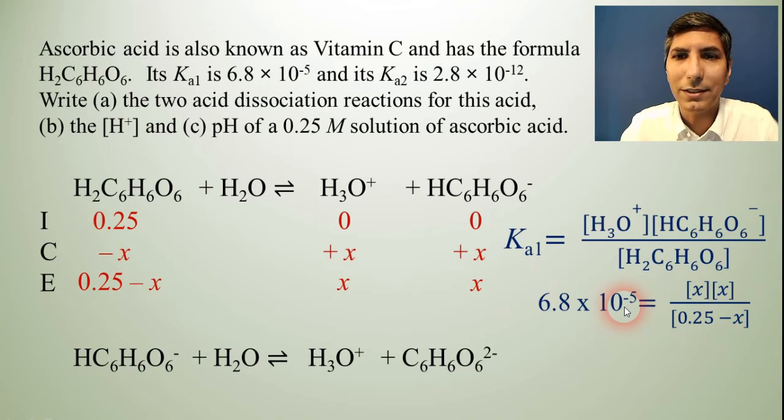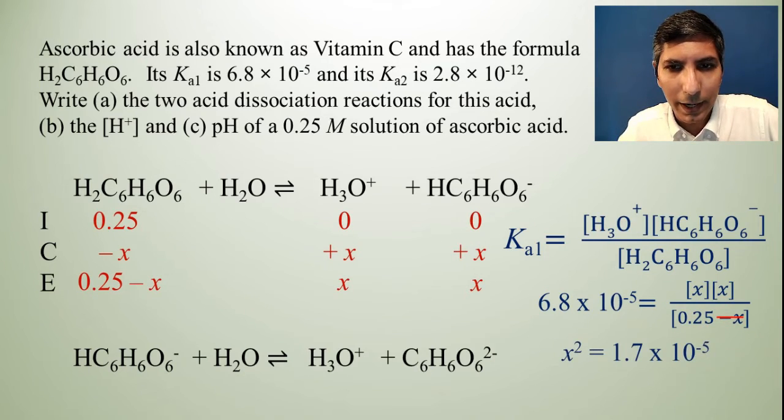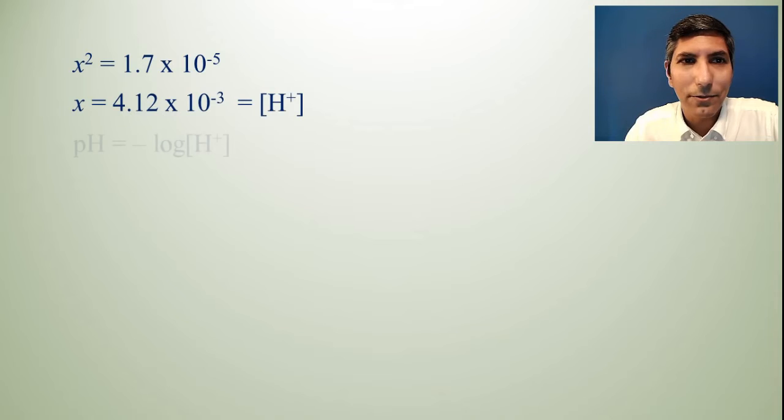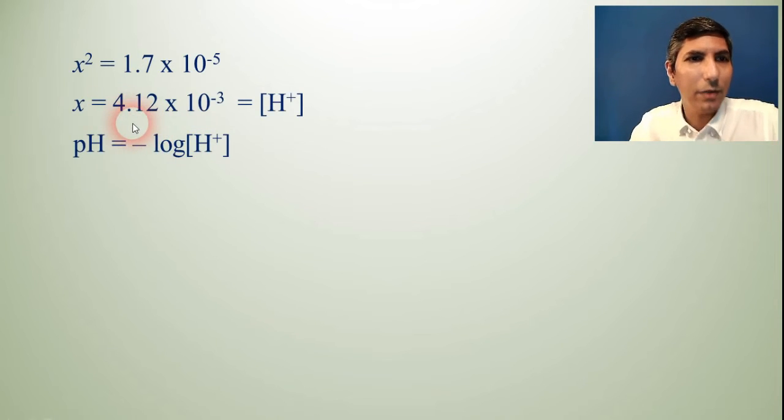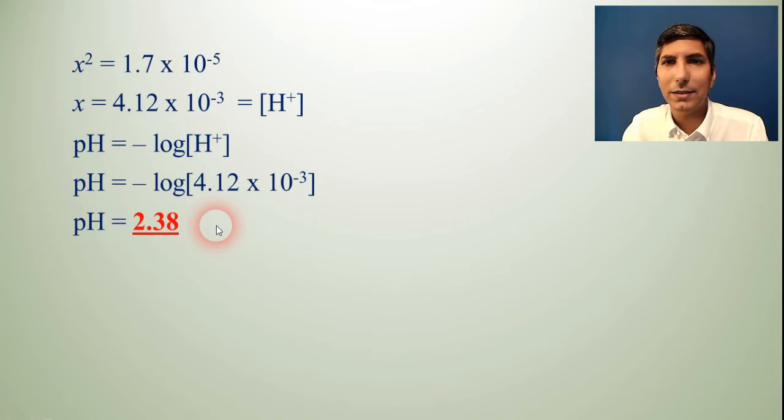So Ka1 equals hydronium times that ion all over the ascorbic acid. The Ka1 is 6.8 times 10 to the negative 5th equals x times x over 0.25 minus x. This is a pretty small equilibrium constant so I'm going to ignore that minus x to make my math easier. So x squared equals 1.7 times 10 to the negative 5th. Now I can take the square root to solve for x and when I do that I get that x is 4.12 times 10 to the negative 3rd and that is my H+. So now to find the pH I just have to take the negative log of that number and so negative log of that number is equal to 2.38. So that is the pH of this ascorbic acid solution.